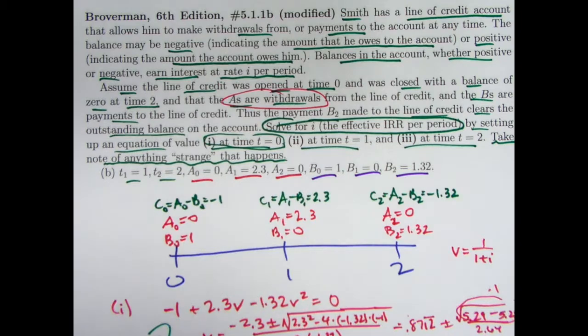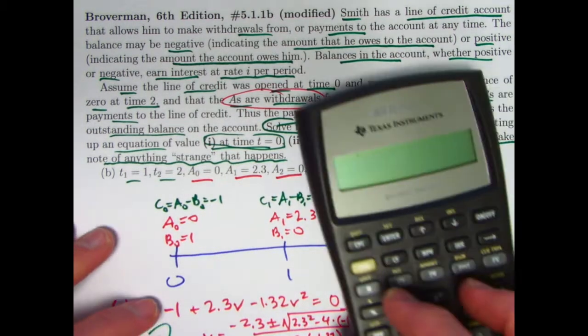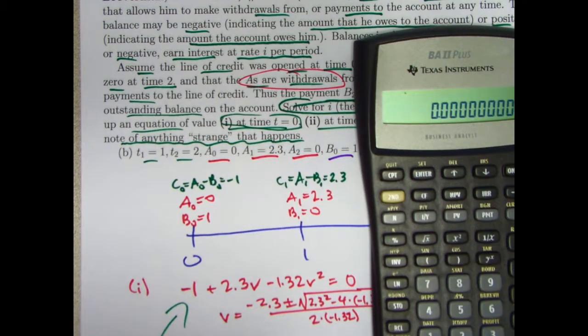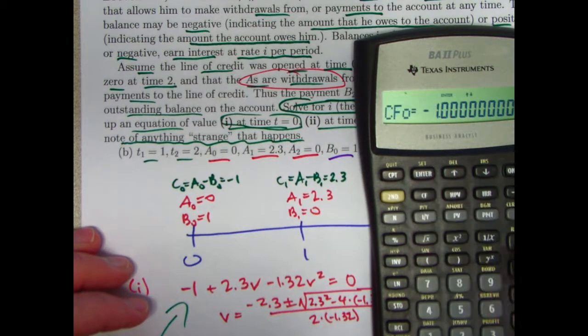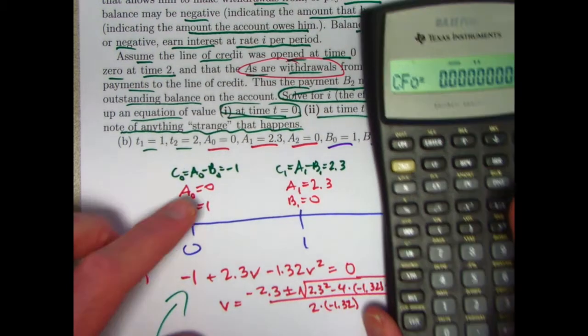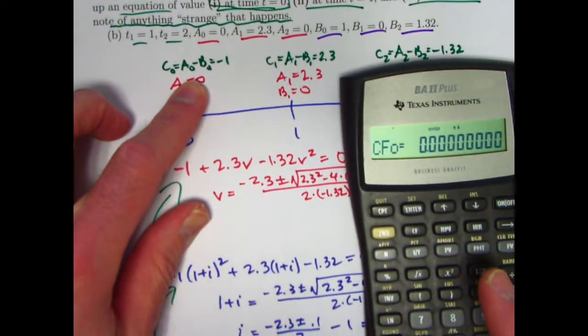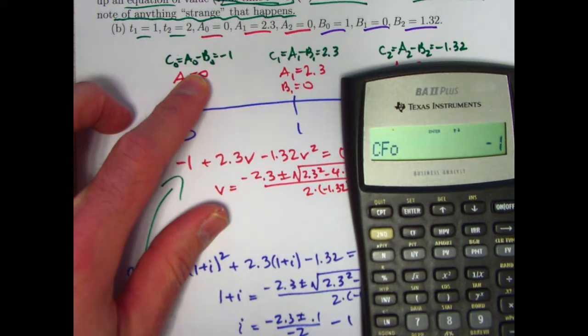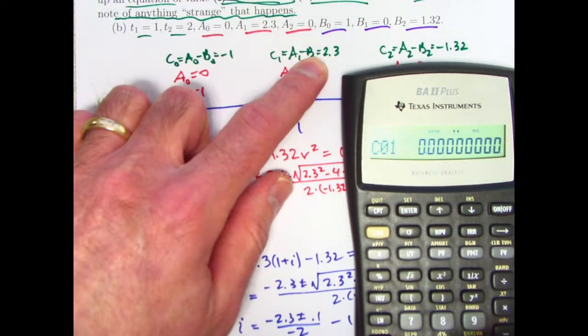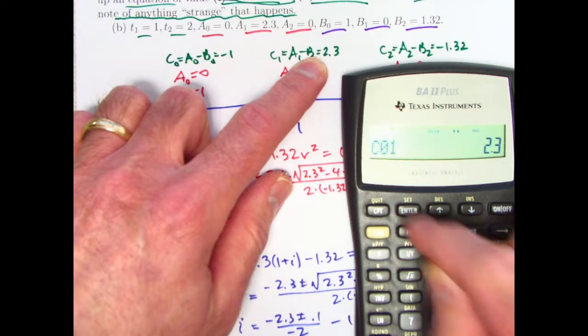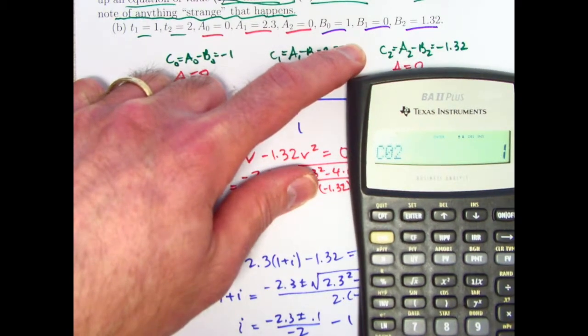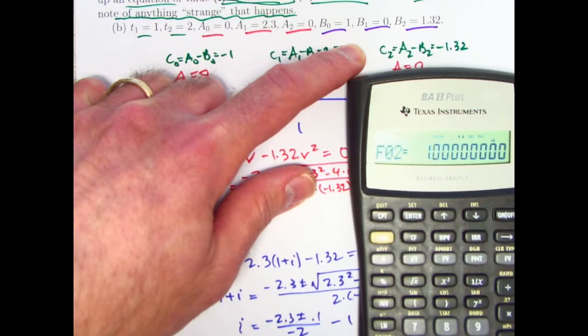Almost forgot that I wanted to confirm the internal rate of return, or at least one of them, with the calculator. Financial functions. So, like I showed you last time, we want to go to the cash flow spreadsheet, so to speak. CF button here. Clear it out. So, do 2nd. Clear work. And now let's look at what we've got here. We've got negative 1 is C0. So, I'll put that in there as negative 1. And enter. And then I'll tab down. C1 is 2.3. Positive. Enter. Its frequency is 1. Leave that as is. C2 is negative 1.32. Enter that. Its frequency is also 1. Leave that as is.